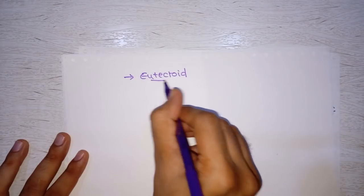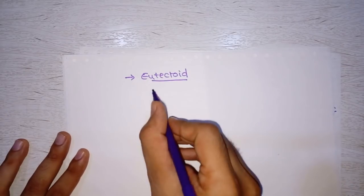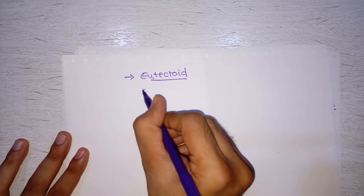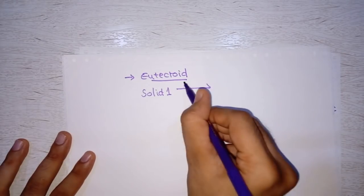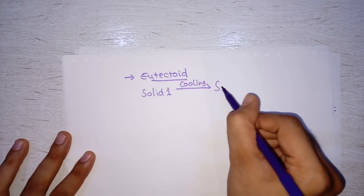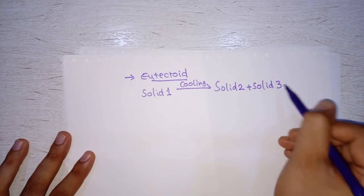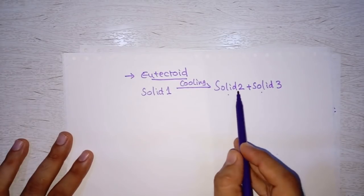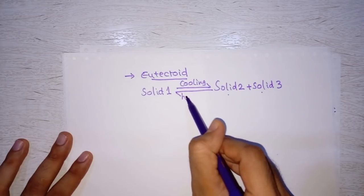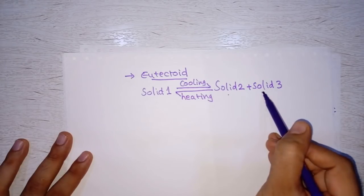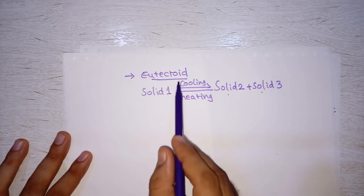The next reaction is eutectoid reaction. The definition of eutectoid reaction says: if at high temperature we have some solid 1, then if we cool it down, we will get a mixture of two different solids — solid 2 plus solid 3. Remember that solid 2 and solid 3 are different from solid 1. The reverse is also true — if we heat solid 2 plus solid 3, we will get solid 1. This is called eutectoid reaction.